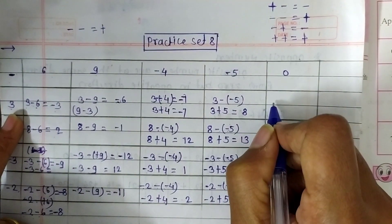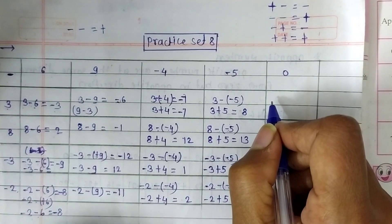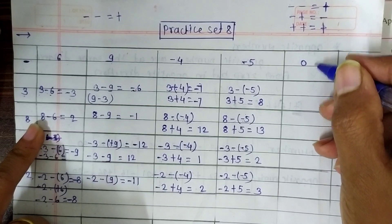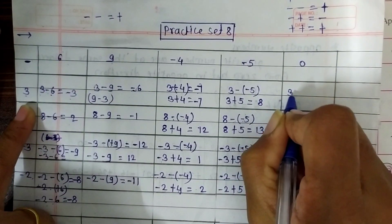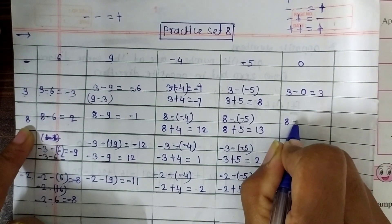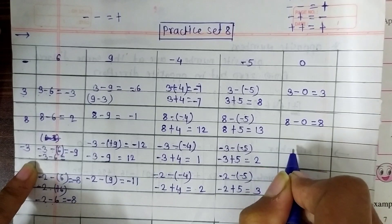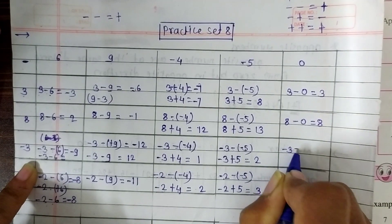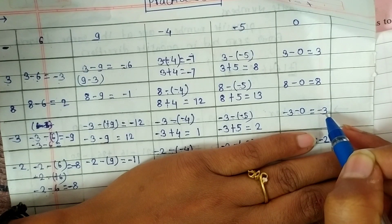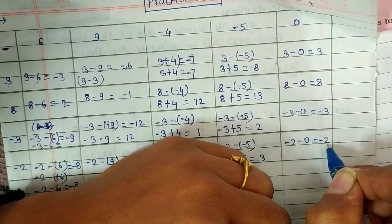When we subtract any number from 0 or 0 from any number, the answer we get is the number itself. So: minus 3 minus 0 is equal to minus 3; 8 minus 0 is equal to 8; minus 3 minus 0 is equal to minus 3; and minus 2 minus 0 is equal to minus 2.